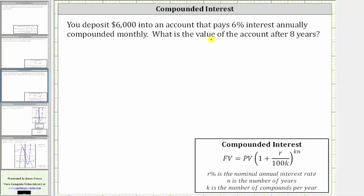We will answer the question using the compound interest formula shown below, where FV, the future value, is equal to PV, the present value, times the quantity one plus R divided by 100K, raised to the power of K times N.